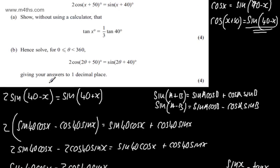In part B it says, hence solve for θ between 0 and 360 degrees: 2 cos(2θ + 50°) equals sin(2θ + 40°), giving your answers to one decimal place. Part B also carries four marks.